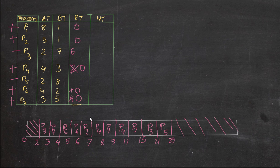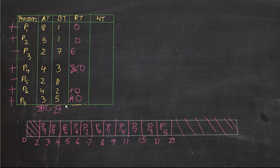To verify the answer, find the sum of all burst times: 7+8+9 gives 12 plus 3 is 12, then 14, 19, and 19 plus 8 is 27. The total burst time equals 27. The Gantt chart runs from 0 to 29, but the CPU was idle for the first two seconds, so 29 minus 2 equals 27. The answer is correct. In every Gantt chart, the sum of burst times should equal the total CPU active time.